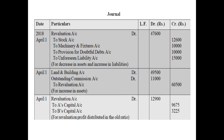Regarding the order of journal entries: irrespective of whether new partner information is given first or old firm information is given first, you must settle all accounts of the old partners before incorporating entries for the new partner. That means before recording capital or goodwill brought in by the new partner, you must first pass the revaluation account entries, or write off any old goodwill from the balance sheet.